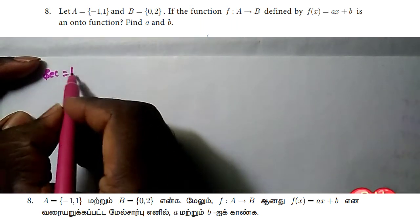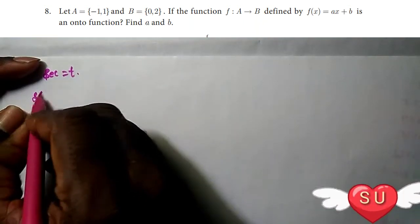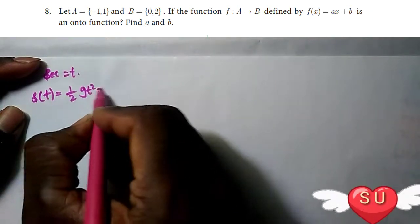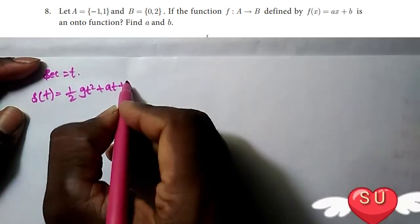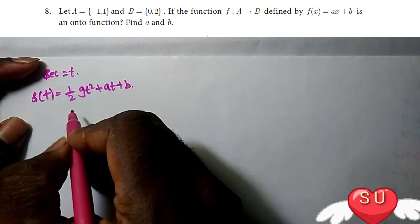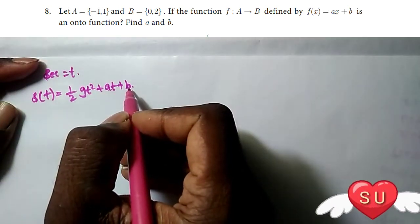The distance is given by the function S(T), defined as S(T) = 1/2 g t² + at + b, where g is the acceleration due to gravity, and a and b are constants.